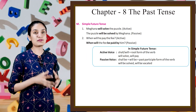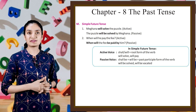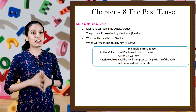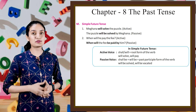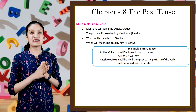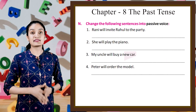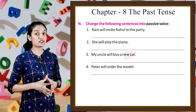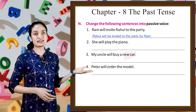Next part is simple future tense. 'Meghna will solve the puzzle' (active) — 'The puzzle will be solved by Meghna' (passive). 'When will he pay the fee?' (active) — 'When will the fee be paid by him?' (passive). In simple future tense, active voice uses shall/will plus root form of the verb — will solve, will pay. Passive voice uses shall be/will be plus past participle — will be solved, will be vacated. Example: 'Rani will invite Rahul to the party' becomes 'Rahul will be invited to the party by Rani.' Do the rest sentences by yourself.